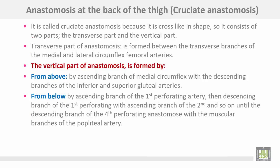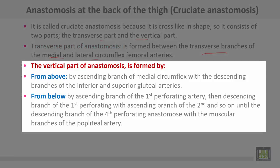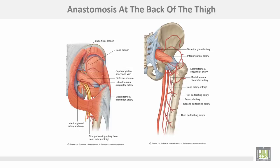The anastomosis at the back of the thigh, sometimes called the cruciate anastomosis, is cross-like in shape and consists of two parts: a transverse part and a vertical part. The transverse part is formed between the transverse branches of the medial and lateral circumflex femoral arteries. The vertical part is formed above by the ascending branch of the medial circumflex with the descending branches of the inferior and superior gluteal arteries, and below by the ascending branch of the first perforating artery; successive perforating arteries anastomose in a chain until the descending branch of the fourth perforating anastomoses with muscular branches from the popliteal artery. This is the cruciate anastomosis showing the horizontal and vertical parts.